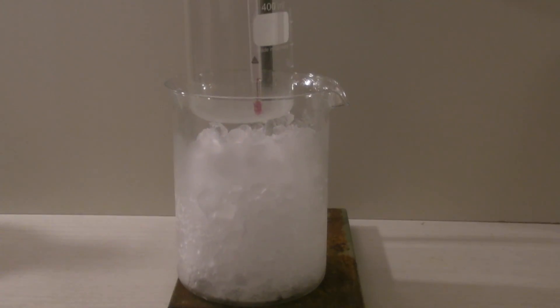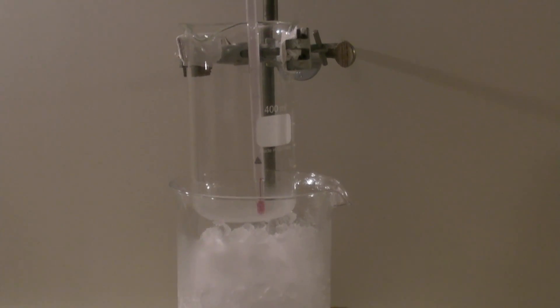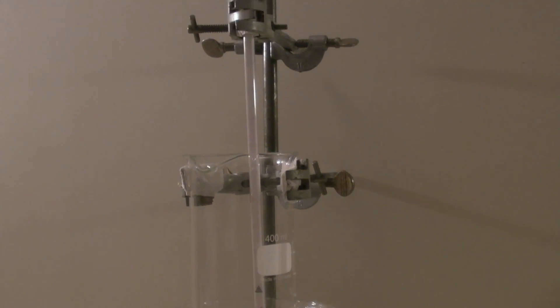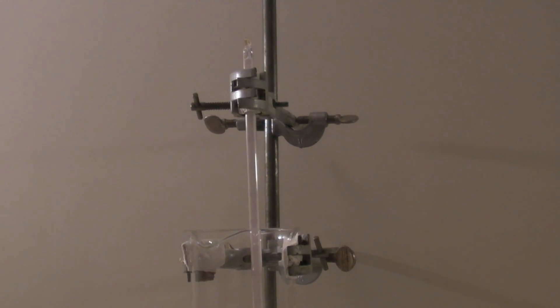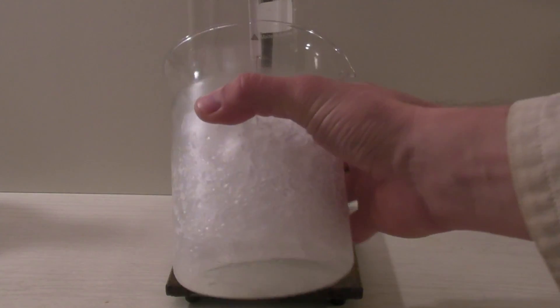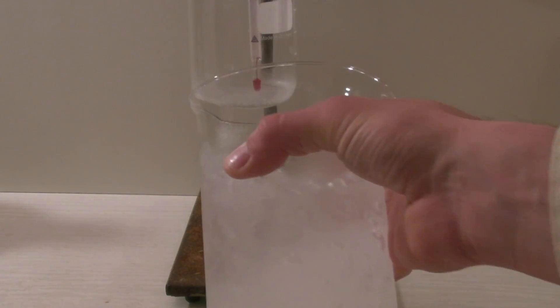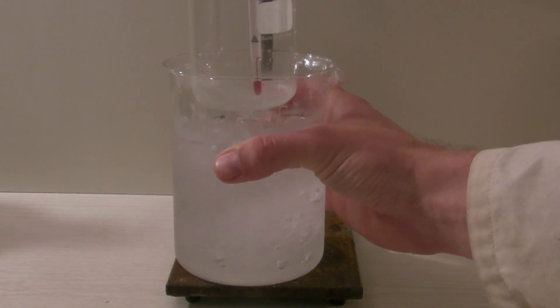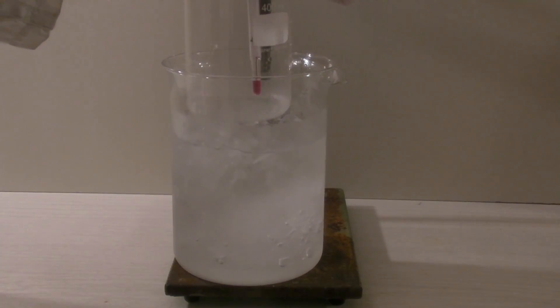For the synthesis a beaker is attached to a ring stand and cooled with an ice bath. A thermometer is hanging into the beaker to keep track of the temperature. It is best to add only a small amount of water and a large amount of salt at the beginning. The thermometer should be placed as close as possible to the wall of the beaker without touching it.